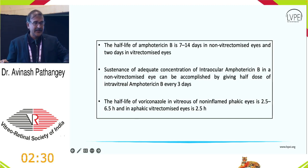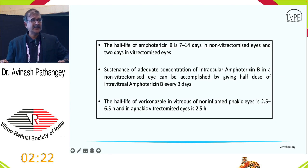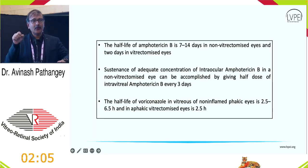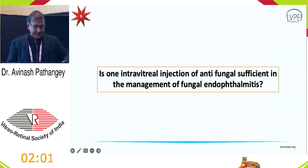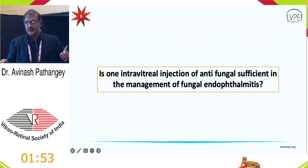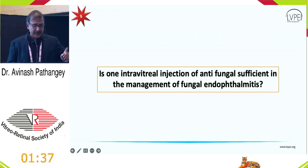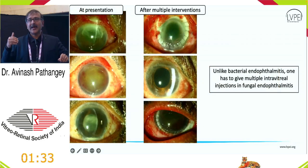In a vitrectomized eye, to sustain concentration for a prolonged period, you can inject 2.5 micrograms every third day. This sustained concentration is important because unlike bacterial endophthalmitis — where often one injection suffices — fungal drugs are fungistatic, not fungicidal. They take longer to achieve killing concentration inside the eye, so you must sustain the concentration. Patients sometimes require 10, 15, or even 20 intravitreal injections. Every three days, inject half the dose to sustain concentration without toxicity.